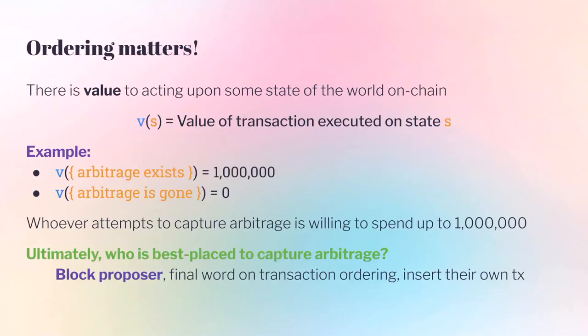The ordering of a block really matters. There's value to acting upon the current chain state. If the state is S and there is a value V(S) you can receive, that value depends entirely on the current state. If the arbitrage still exists when you put your transaction in, you might make a million dollars. If you do the same transaction after the arbitrage has already been captured by someone else, your value is zero. Whoever is trying to capture that arbitrage is willing to spend up to a million dollars to get the right to act upon the state where the arbitrage still exists.